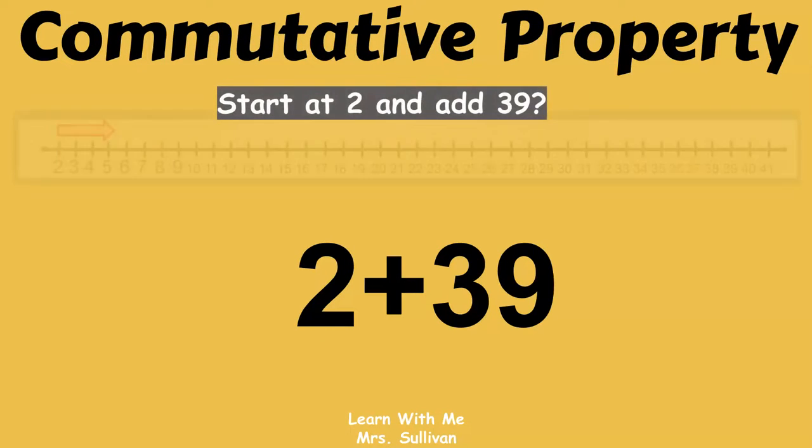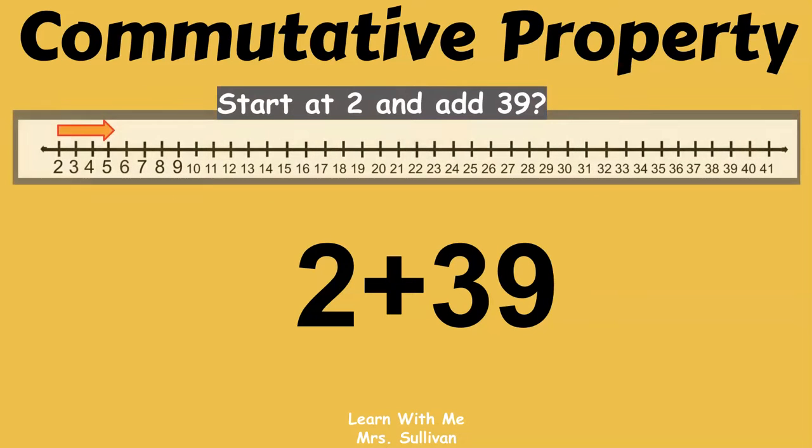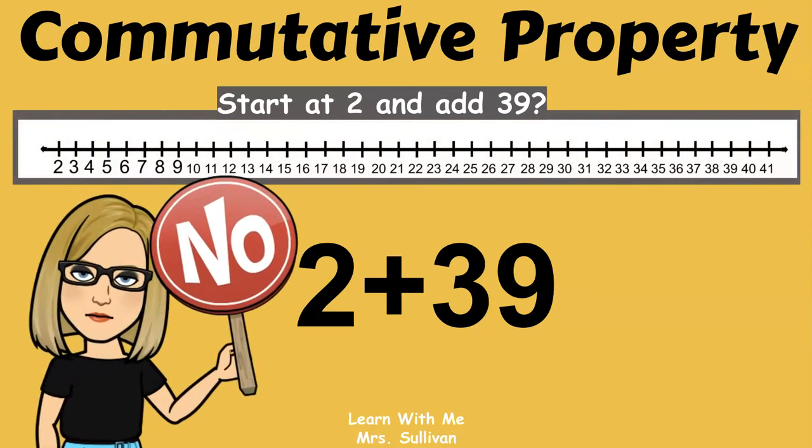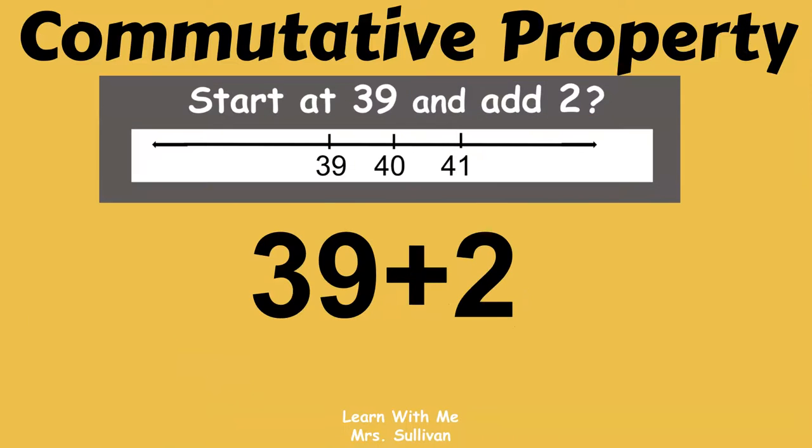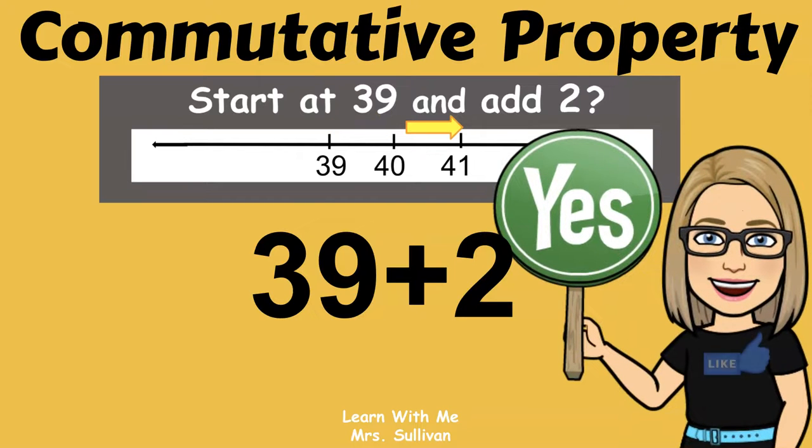Starting at 2 and counting on to add 39 would take a long time, and you could lose your place, and you definitely can't use your fingers. Starting at 39 and counting on 2 is quick, and you could even use your fingers.